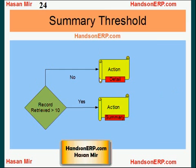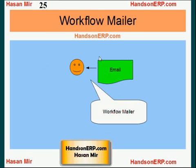You can also define a summary threshold. For example, you can define something like: if the number of records retrieved are more than 10, then execute the summary action; otherwise execute the detail action. So if 5 records are retrieved, you will receive 5 emails. If 50 records are retrieved, you will receive only 1 email.